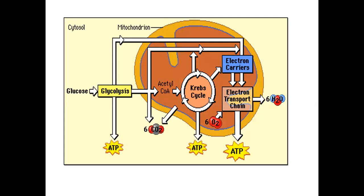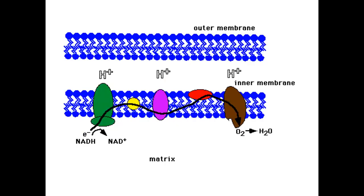Here is a sketch to recall the key processes: glucose undergoes glycolysis in the cytosol, then the Krebs cycle, then the electron transport chain, producing ATP as the energy for the cell. Looking at the diagram, we have the outer membrane, inner membrane, movement of ions, and NADH losing one electron to produce NAD+, with H+ moving from the inner membrane, and O2 and H2O in the matrix.